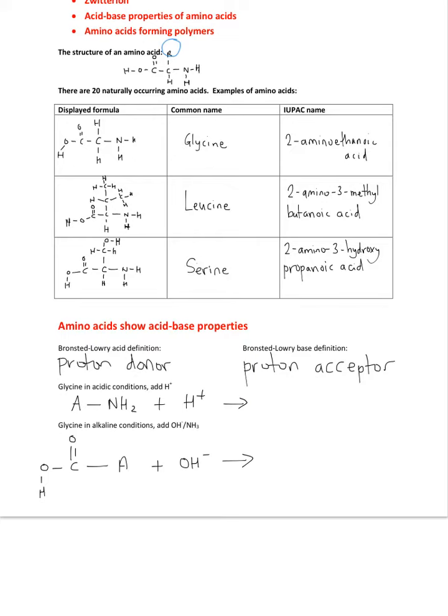Serine is the last one we're going to look at today. We can find the longest chain, so it's three carbons long. We can see the amino group in the two position. So it's called 2-amino-3-hydroxypropanoic acid.